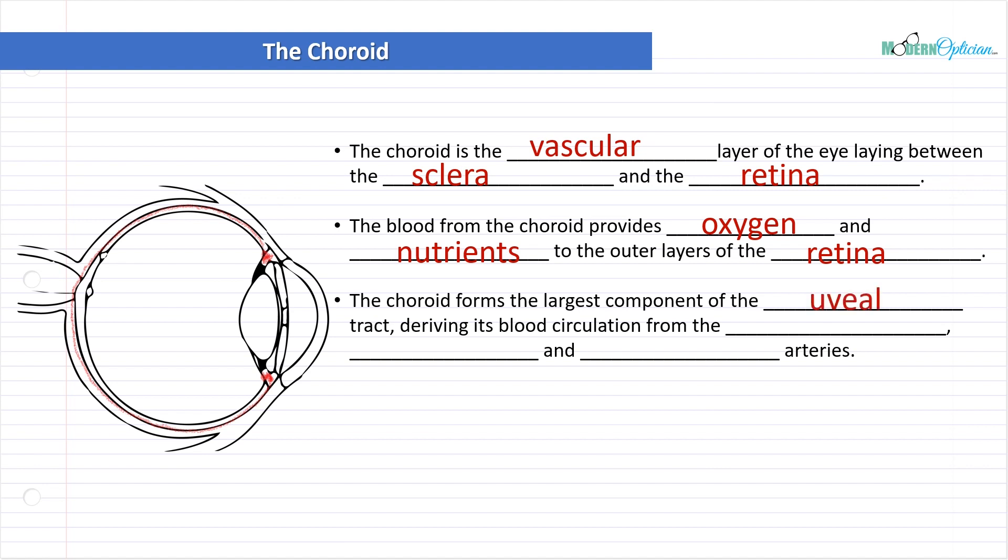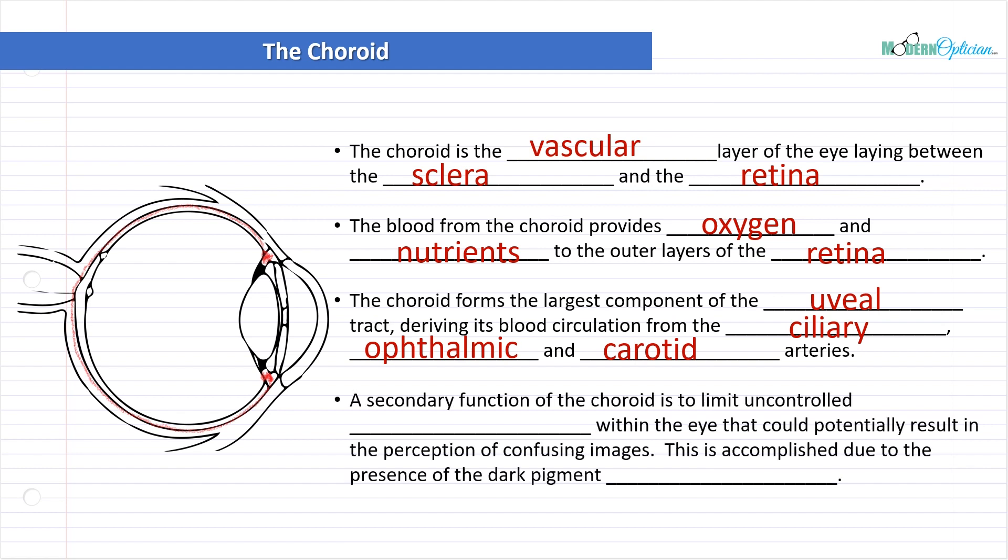Now, the choroid forms the largest component of the uveal tract. We talked about how the uveal tract is composed of the blood-containing parts. It derives its blood circulation from the ciliary, ophthalmic, and carotid arteries. So this is the big thing here: all the blood in the eye is concentrated in the choroid, and the other parts of the uveal tract, like the ciliary body and the iris, are also part of that vascular network. If you notice it goes all the way around the eye, it's very smartly designed so that all parts of the uveal tract can derive oxygenated blood from that structure.